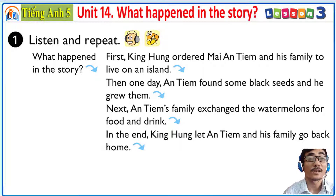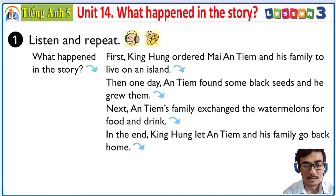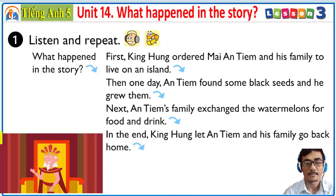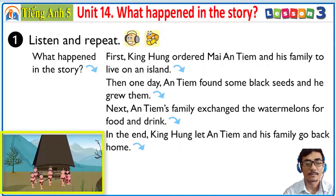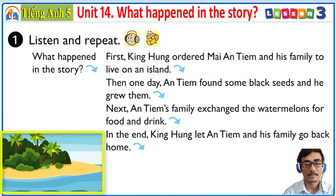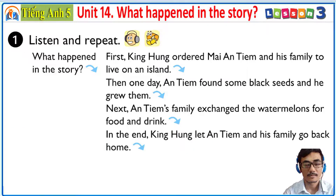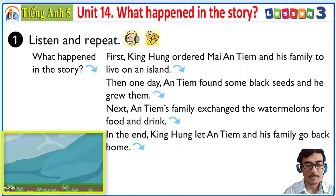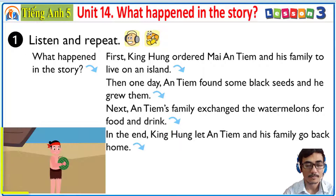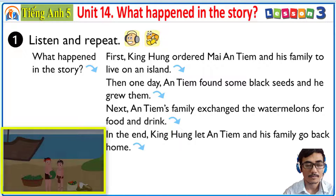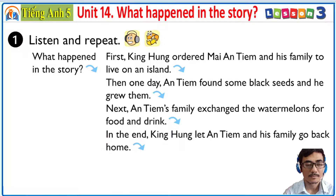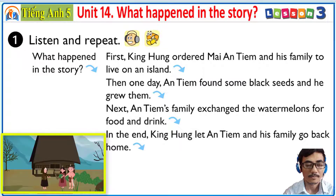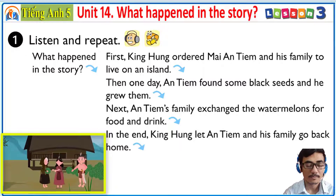Now, listen for the second time and repeat. What happened in the story? First, King Hong ordered Mai An Tian and his family to live on an island. Then one day, An Tian found some black seeds and he grew them. Next, An Tian's family exchanged the watermelons for food and drink. In the end, King Hong let An Tian and his family go back home.